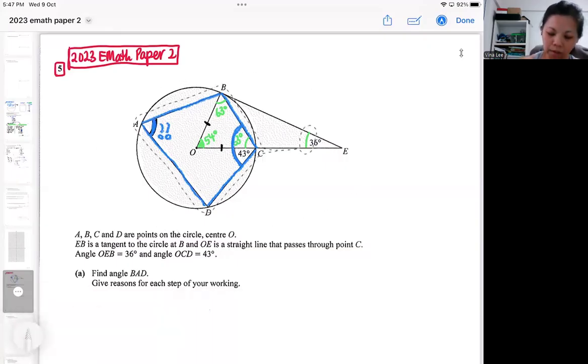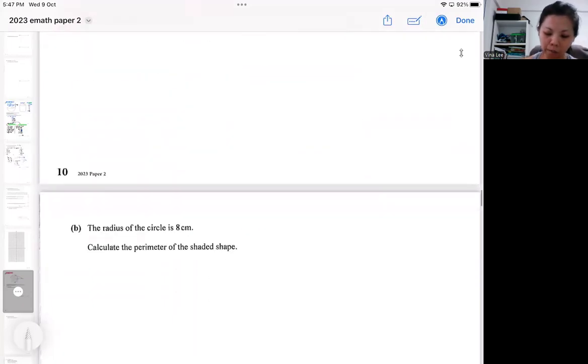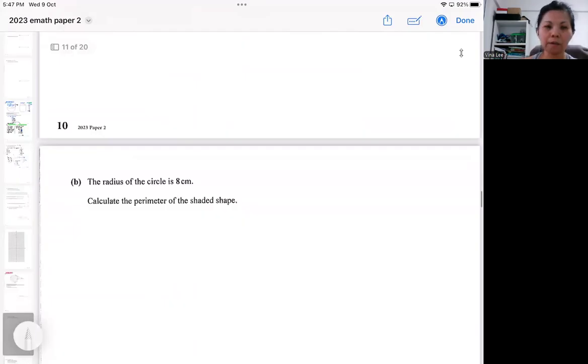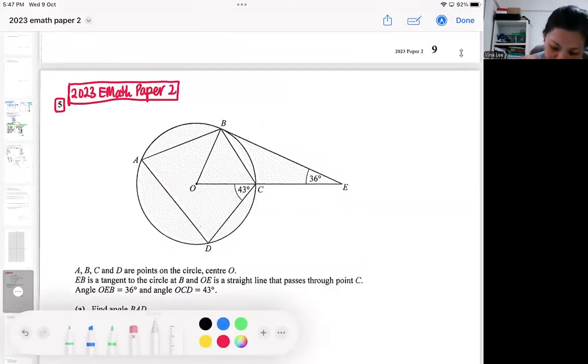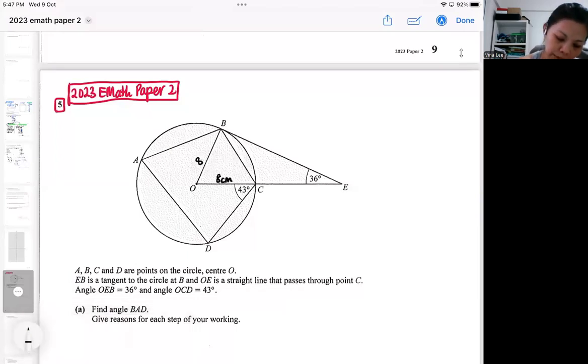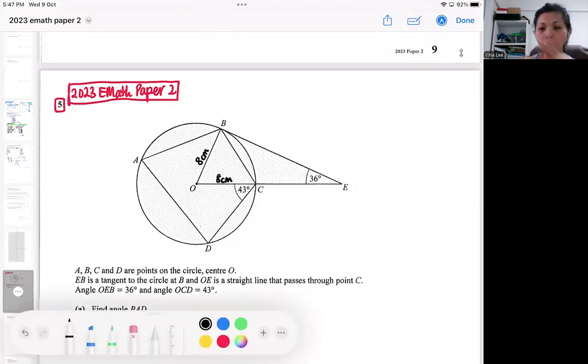Once you have everything already, the second part is to get the perimeter of the shaded shape. They simply gave a radius and then you are supposed to find the perimeter of the shaded shape. Don't forget whatever you already have, your angles, but have a plan first. The whole thing is shaded. How are you going to find the whole thing? I'm going to split the whole thing.